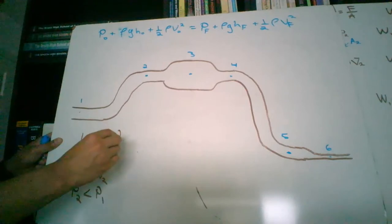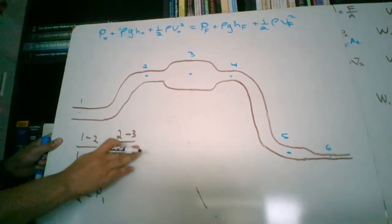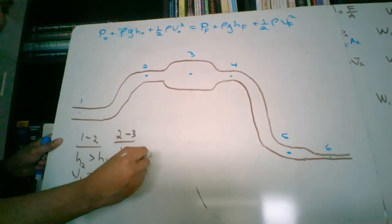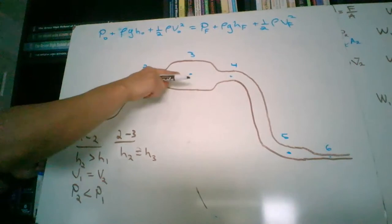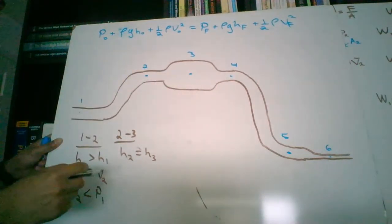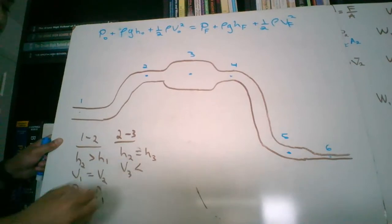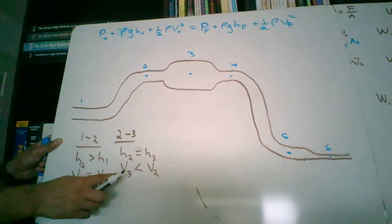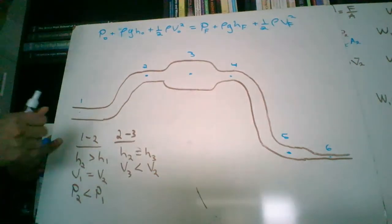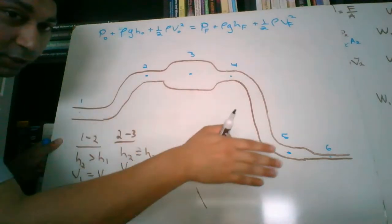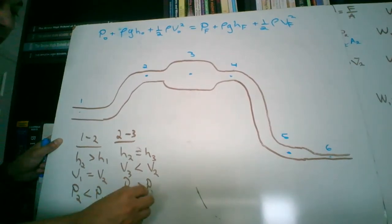Going from point 2 to point 3: H2 equals H3 — the height didn't change. But when you go into a wider pipe, the speed decreases, so V3 is less than V2. When the fluid slows down, pressure increases. When the fluid is moving fast, pressure decreases; when it's moving slow, pressure increases. Therefore, pressure 3 is going to be bigger than pressure 2.